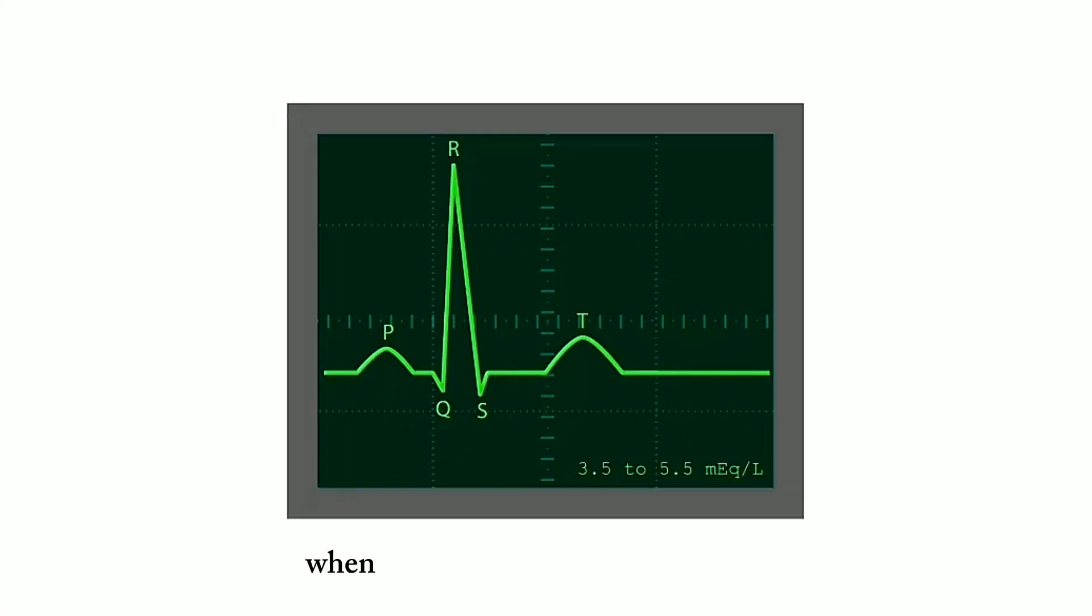Here's a normal ECG wave when serum potassium is between 3.5 and 5.5 milliequivalents, which is normal.